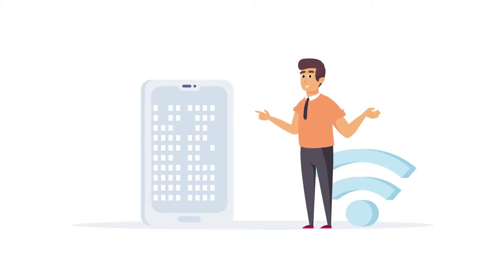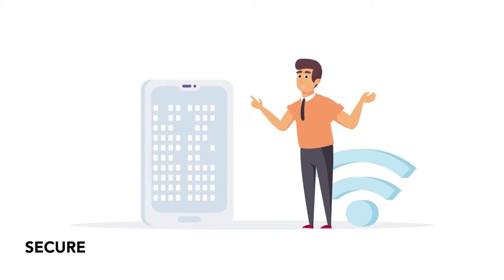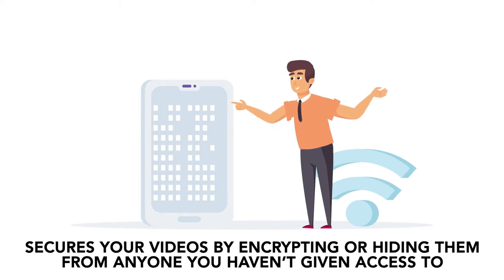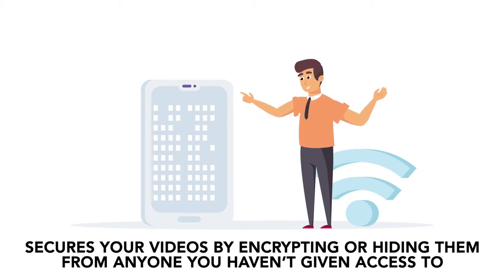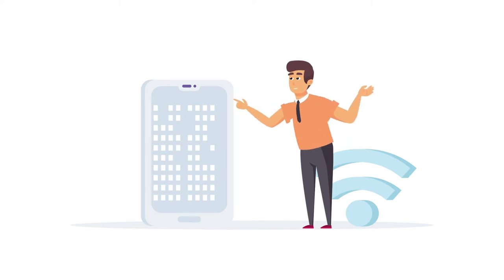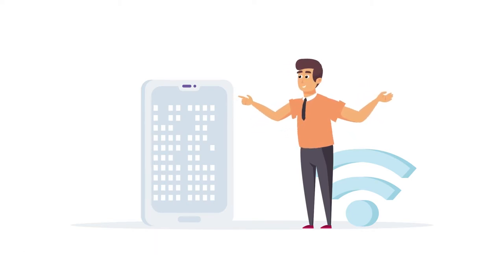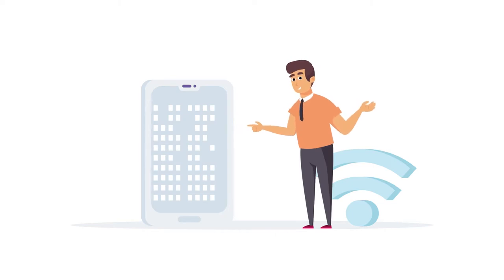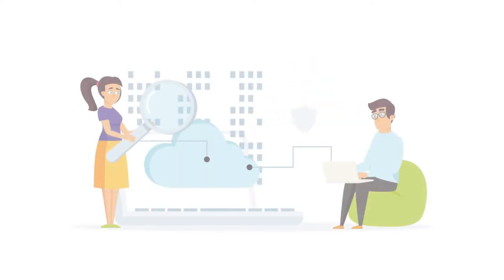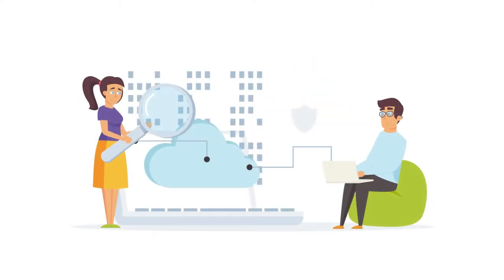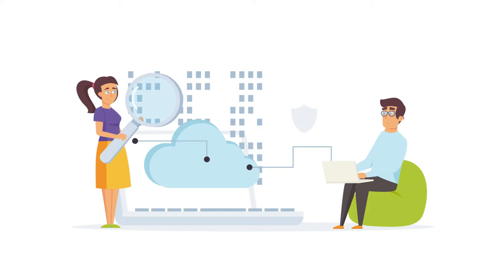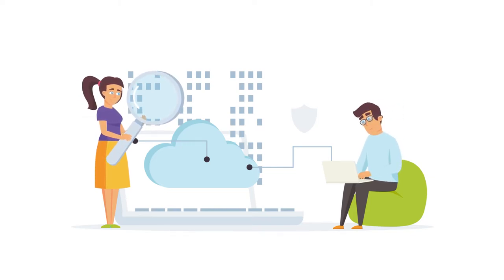Using video encryption secures your videos by encrypting or hiding them from anyone you haven't given access to. DRM encryption technology used alongside watermarking can track any pirated content. DRM protection with mobile apps also has additional security to completely block any screen capture tools from working.